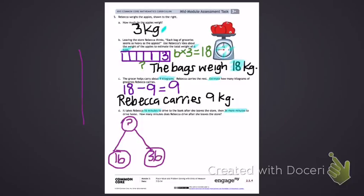If I look at that number bond, I can see that we do not have equal groups. If I don't have equal groups, I cannot multiply. So I am going to add to find my total. 16 minutes plus 36 minutes. 6 plus 6 is 12. I am going to regroup at the bottom so I don't forget to add that 1. 1 plus 3 plus 1 more is 5.